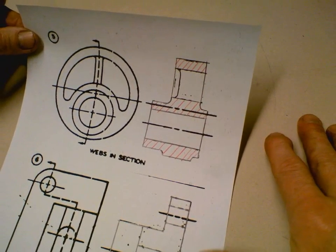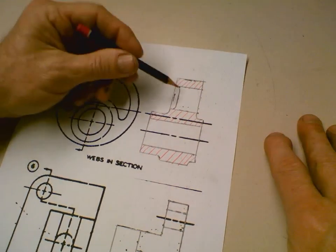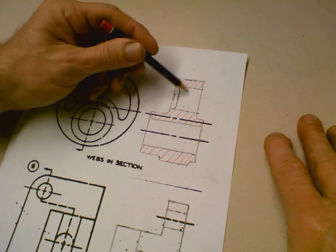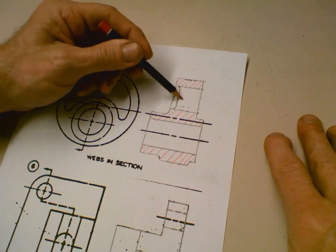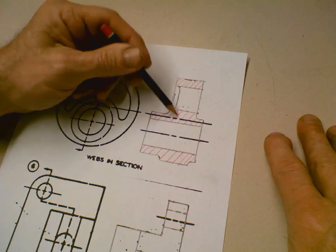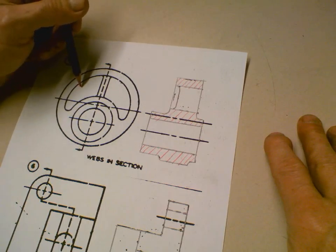So there's your final solution for that one, number five, webs and sections. Again, this does not get sectioned. If you were to section through it, it would make it look like this is one big mass, but it's not. It's all empty in here, except for that little bit.